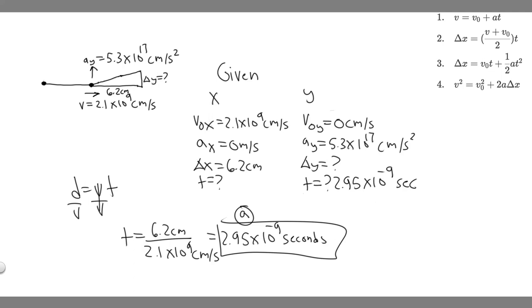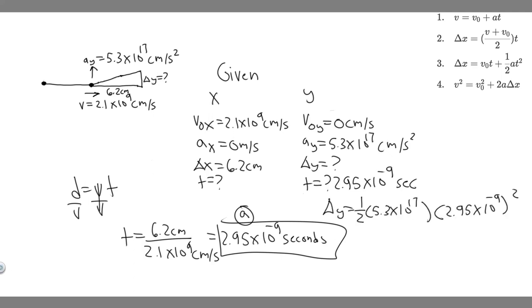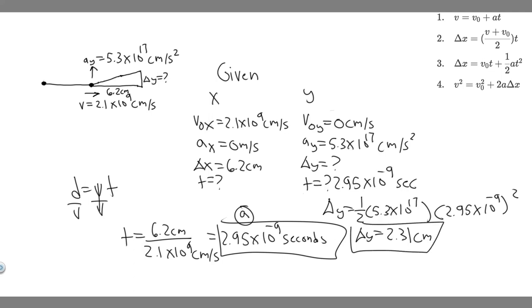We use the kinematic equation delta y equals v sub 0y times t plus one-half times a times t squared. Since v sub 0y is 0, that first term drops out. So delta y equals one-half times 5.3 times 10 to the 17 times (2.95 times 10 to the minus 9) squared. Plugging that in gives delta y equals 2.31 centimeters — that's how far the electron travels in the vertical direction.